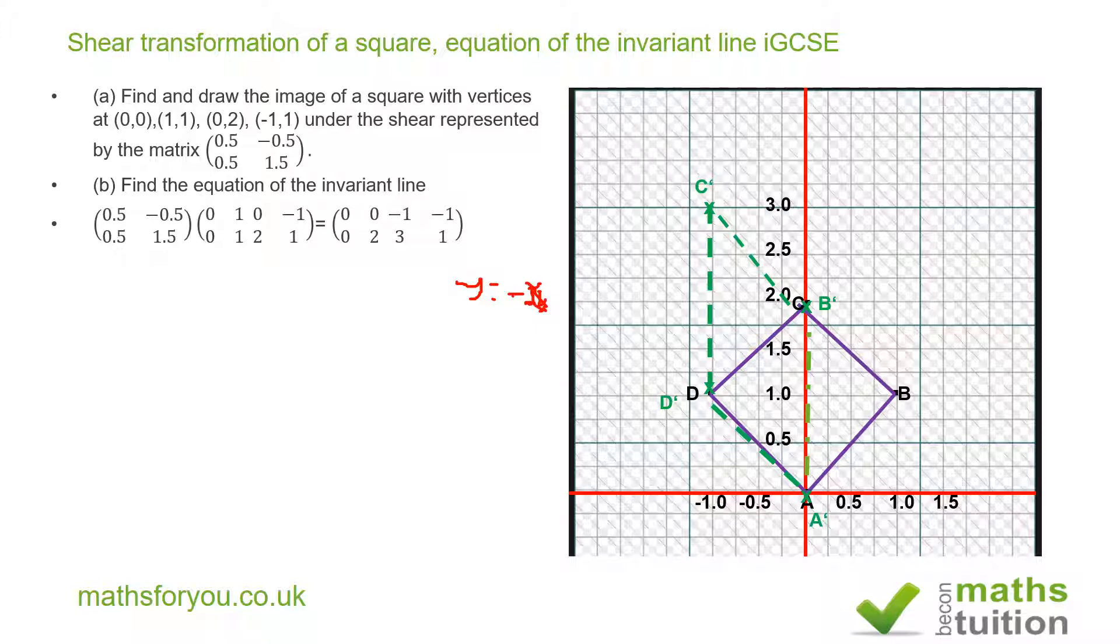Now I can do this another way. By definition, if a point is on the invariant line it will not move, so what you need to show is that (x,y) will be the same as (x',y'). If we multiply out,